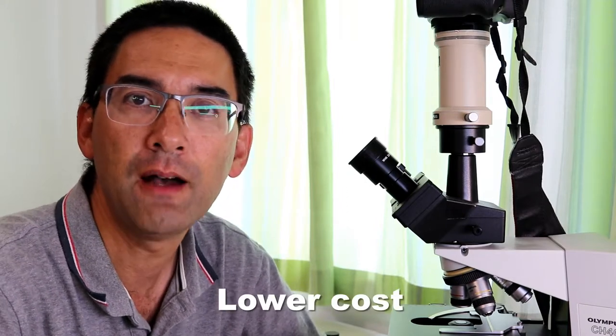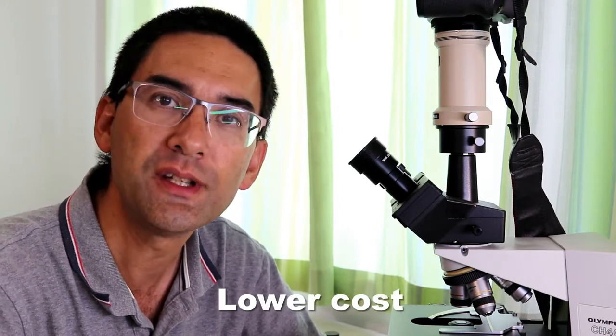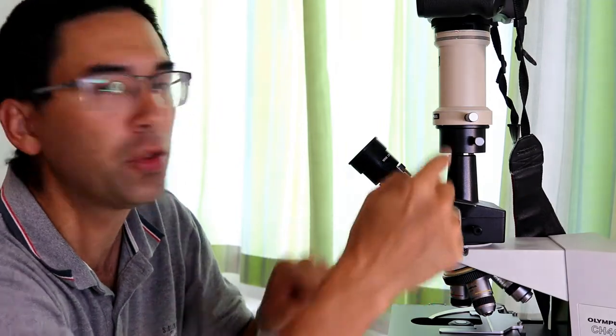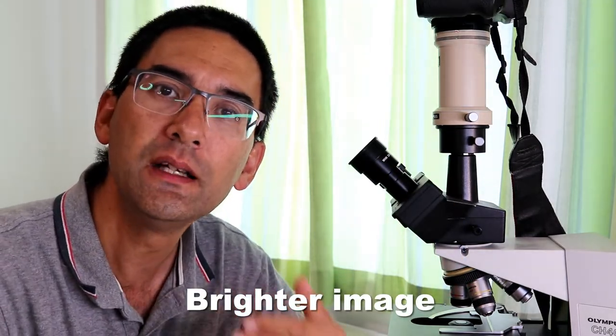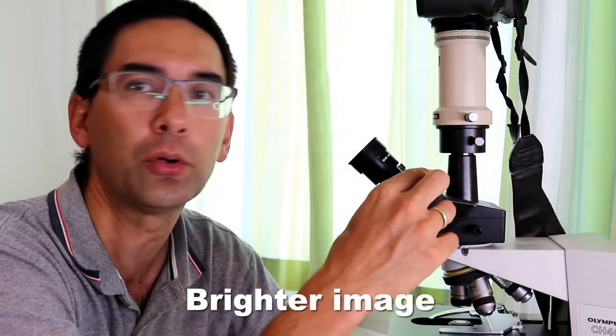So monocular microscopes, besides being significantly cheaper of course, have the advantage that in educational use, when for example students have to carry the microscope from a cupboard to their desk, it's much easier because they're lighter and there's less possibility of damage being done. The other advantage of monocular microscopes is that because the light of the objective is not split up into two or three parts, the image is a little bit brighter than in binocular microscopes.